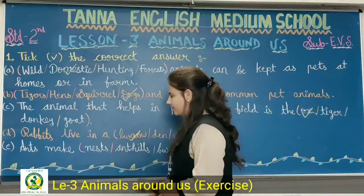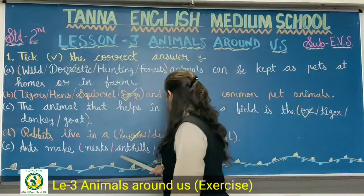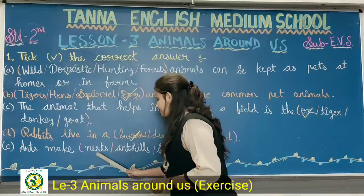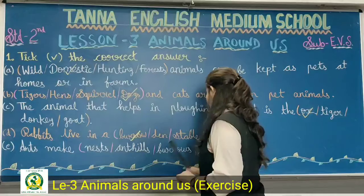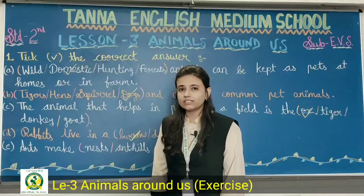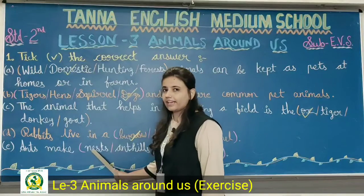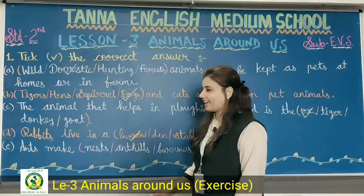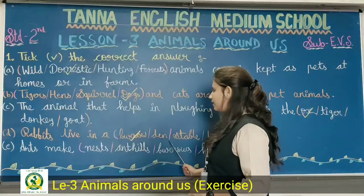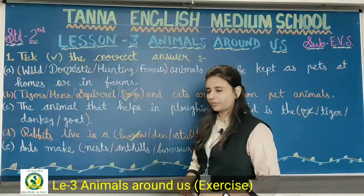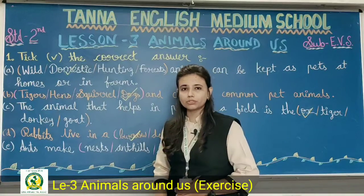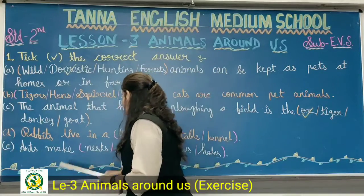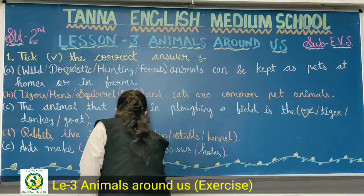Kar rahe ho na meri saath? Last question: ants smack dash. Students, ants kya banaate hai? And your options are: nests, ant hills, burrows, holes. Ants kya banaate hai students? Ants nest banaate hai? No — birds build nests. Ant hills? Yes! Ant hills is your correct answer. Burrows — rabbit ke ghar ko hum bolte hai burrows. So what is your correct answer? Ant hill. Ant hill is your correct answer. So all of you tick the option: ant hill.